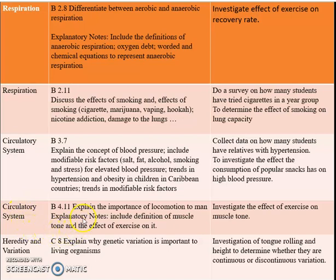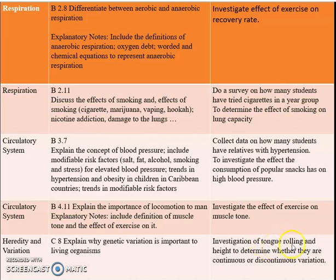For the circulatory system, the objective is to explain the importance of locomotion to humans, including the definition of muscle tone and the effect of exercise on it. Students can investigate the effect of exercise on muscle tone. For heredity and variation, students can explain why genetic variation is important to living organisms, and investigate tongue rolling and height to determine whether they are continuous or discontinuous variation.